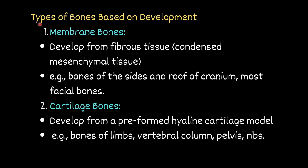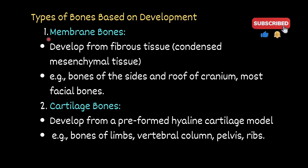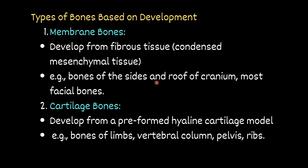Accordingly, there are two types of bone based on their development. First is the membranous bone, which develops from fibrous tissue — that is, condensed mesenchymal tissue or primitive connective tissue — such as bones of the sides and roof of the cranium and most facial bones. Second are cartilage bones, which develop from a preformed, pre-existing hyaline cartilage model, such as bones of the limbs, vertebral column, pelvis, and ribs.